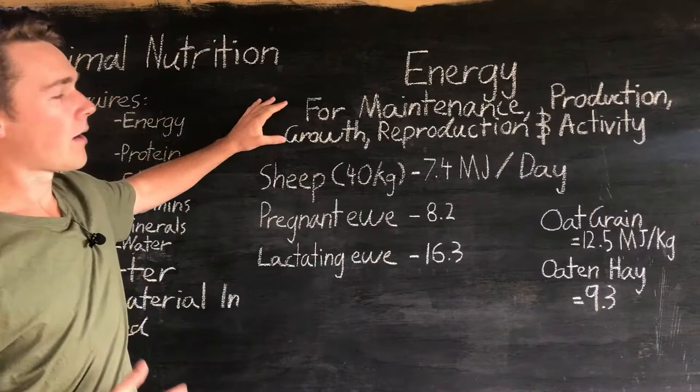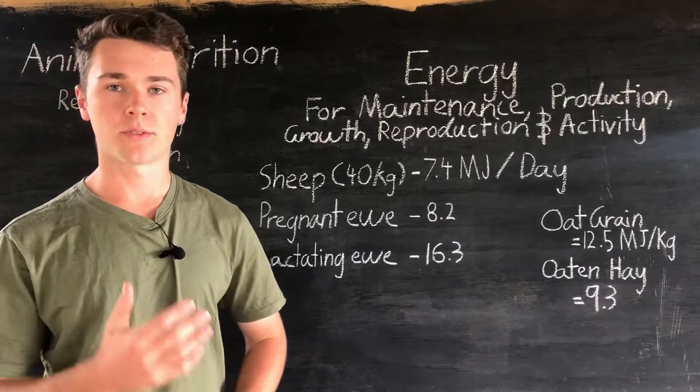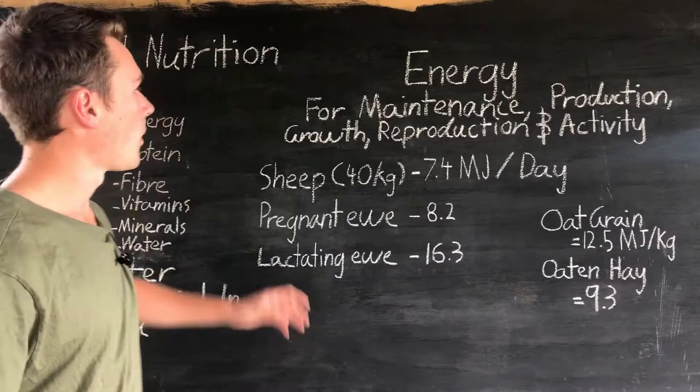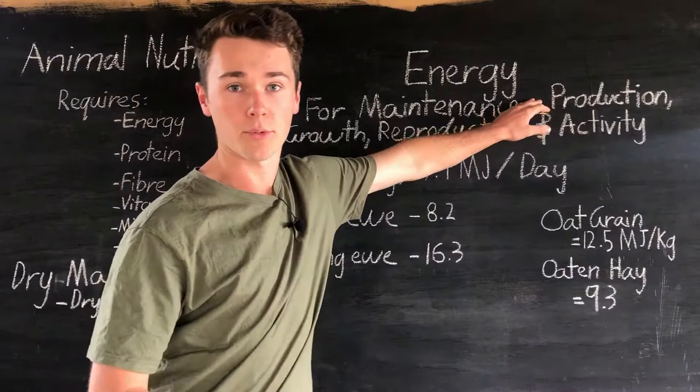Energy is required for a range of different functions. The first is maintenance — the very basic survival processes for animals, such as digestion and circulating blood, all the basic functions that keep it alive. Next is production: that's production of milk, eggs, any product you get from an animal. Energy is required to produce these.